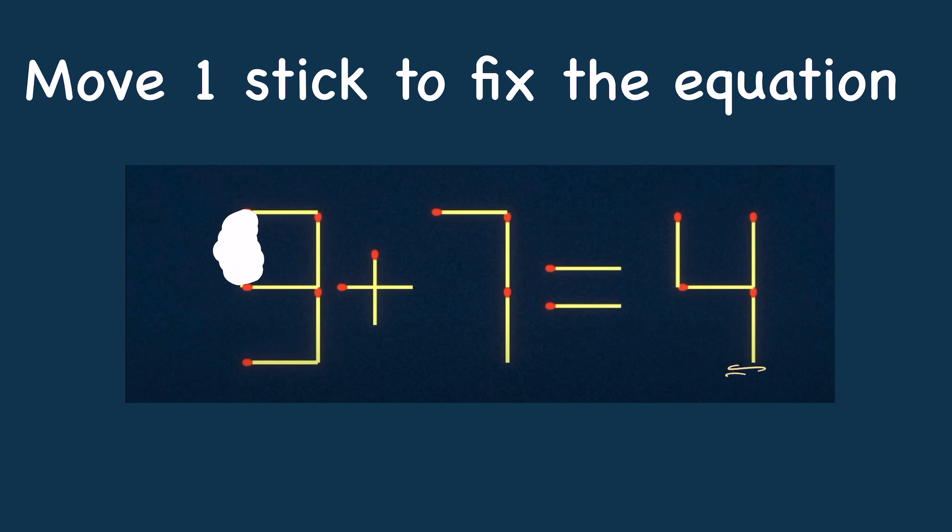We can move this stick from here, so this becomes 3. But where to put this one stick to make it correct? What we can do is move this stick from here, making it 3, and with this extra stick make it minus 3. So now this is minus 3 plus 7 equals 4. Our equation is correct! Isn't it fun?